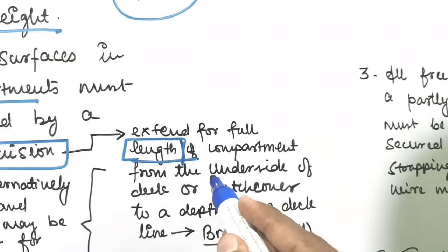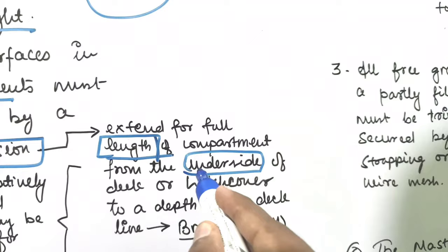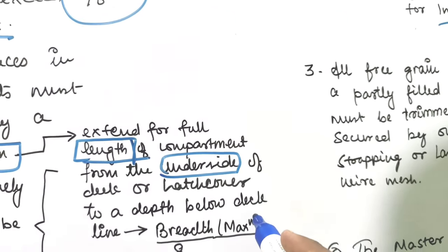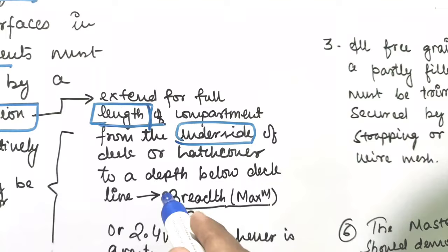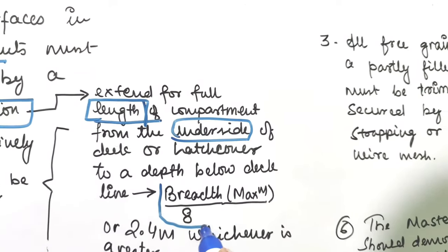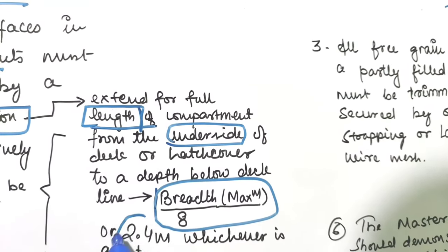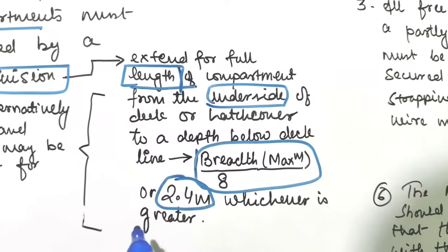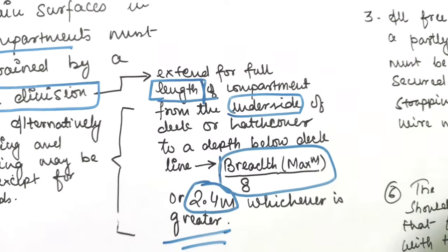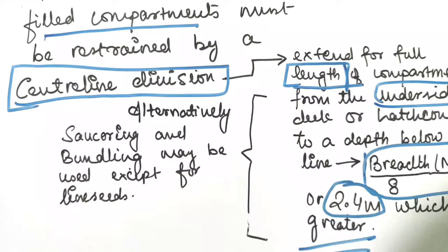This centerline division extends for the full length of the compartment from the underside of the deck or hatch cover to a depth below the deck. This depth is one-eighth of the maximum breadth or 2.4 meters, whichever is greater.